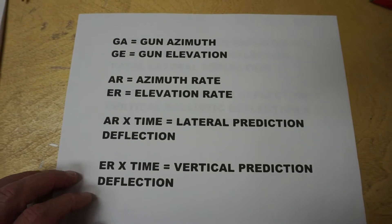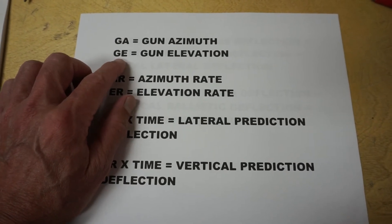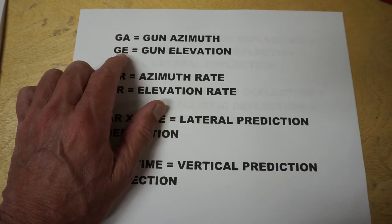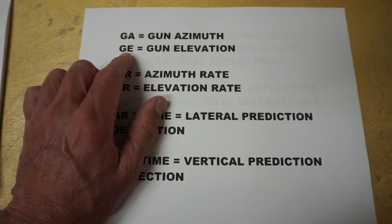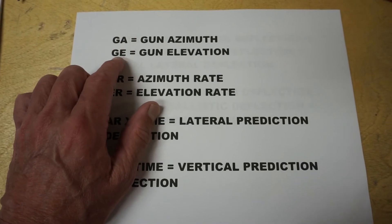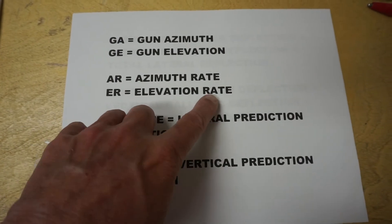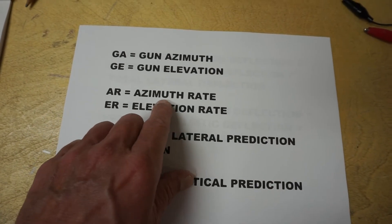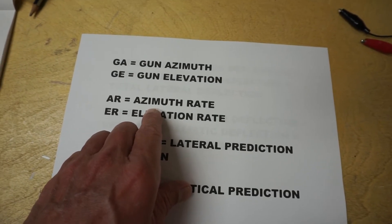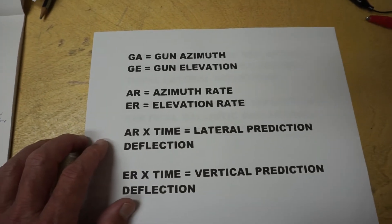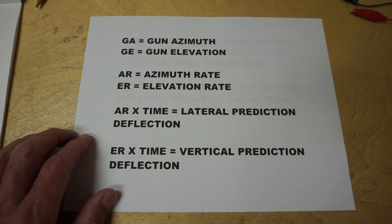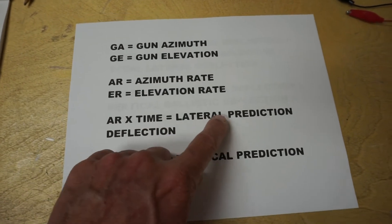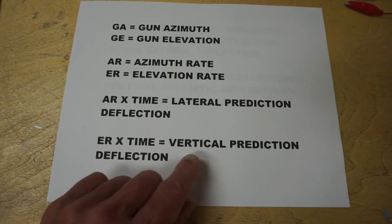GA is gun azimuth and GE is gun elevation — horizontal and vertical. Both inputs are on the lower right of the gun sight, driven by rotary drive shafts providing GA and GE inputs. The gun sight uses rates of change of azimuth and elevation: the azimuth rate is how fast the turret is rotating, and the elevation rate is how fast the guns are moving up or down. Using the time it knows from range — which is inversely related to time — azimuth rate times time gives a lateral prediction deflection, and elevation rate times time gives a vertical prediction deflection.